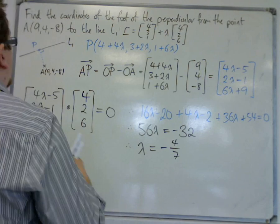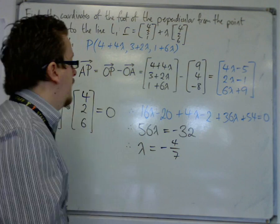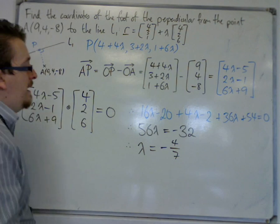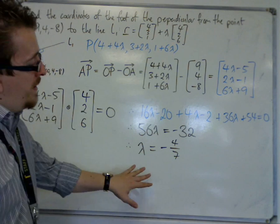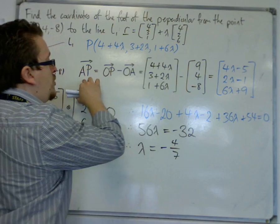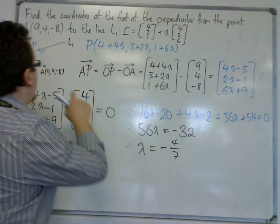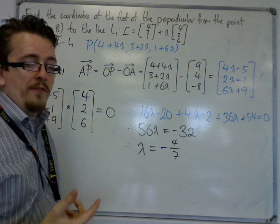And in doing that, you must go through this whole process, as usual, to get your value of lambda, because we still really need the coordinates of P. But at this stage, what we can do is we can substitute the value of lambda into the vector AP, and then I can work out the length of that vector.